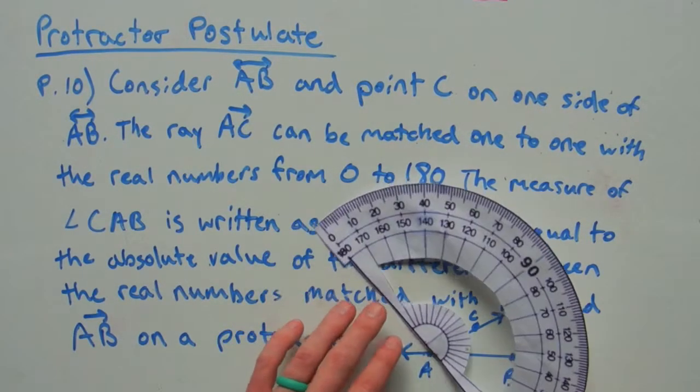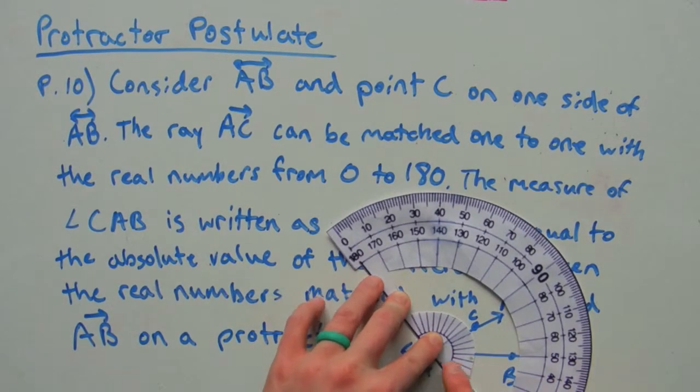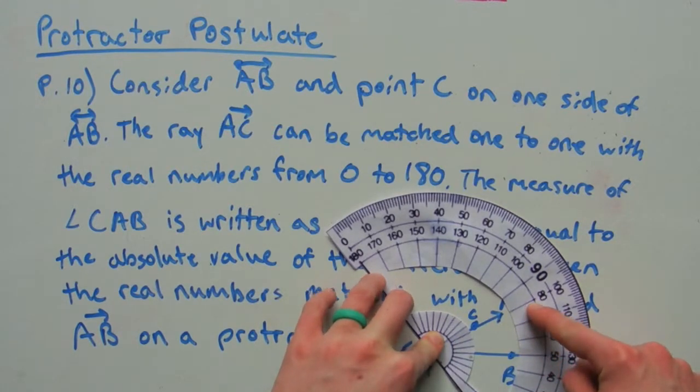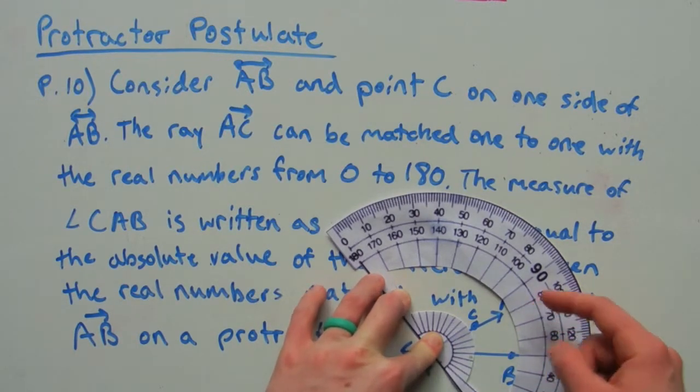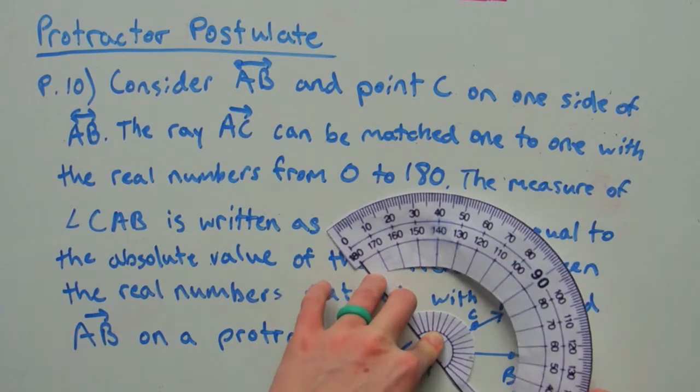Or, if there was some other line but we still wanted to measure CAB, AB falls on 50 and AC falls on 80. And the absolute value of 80 minus 50, or the absolute value of 50 minus 80, is still 30 degrees.